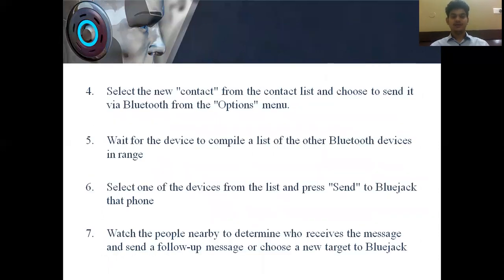Step 4: select the new contact from the contact list and choose to send it via Bluetooth from the options menu. Step 5: wait for the device to compile a list of other Bluetooth devices in range, select one of the devices and press send to Blue Jack that phone. Step 6: watch the people nearby to determine who received the message, then send a follow-up message or choose a new target to Blue Jack.